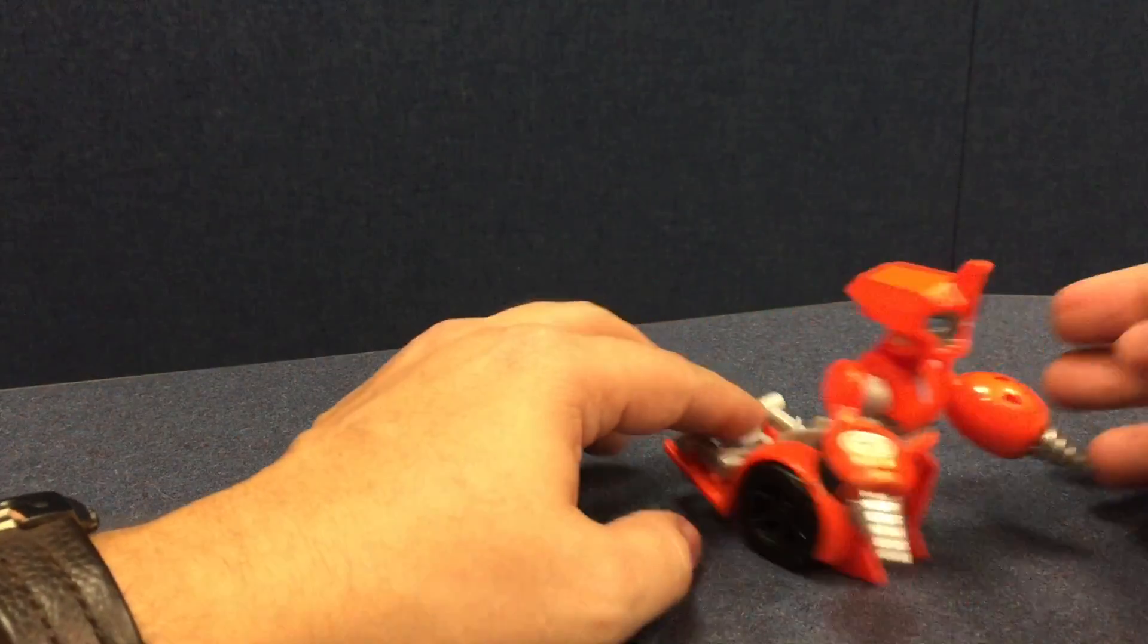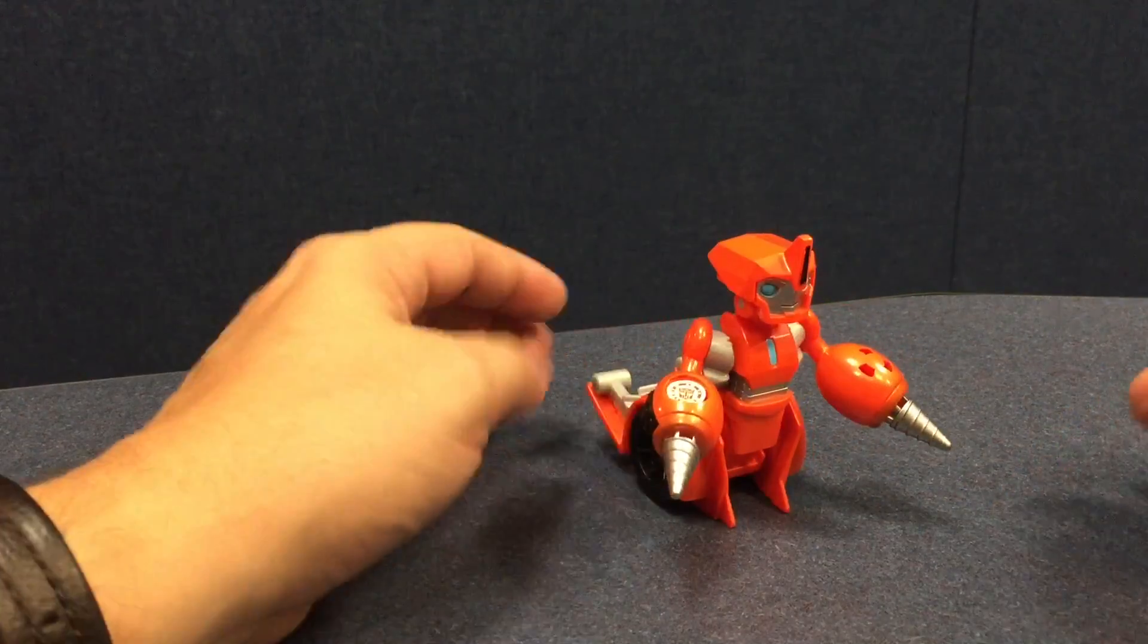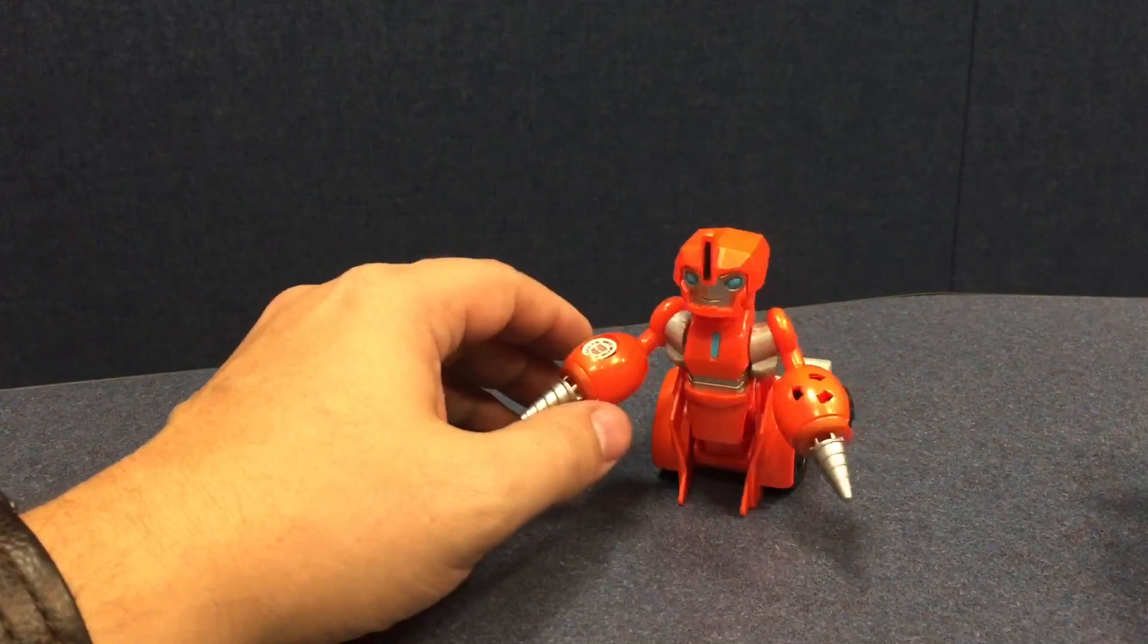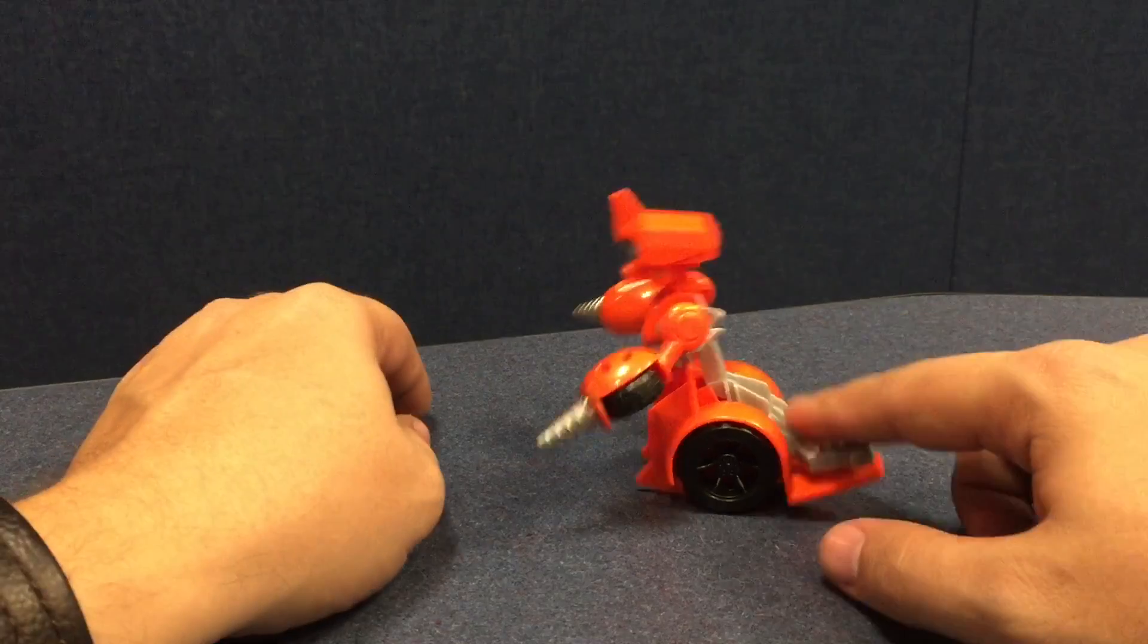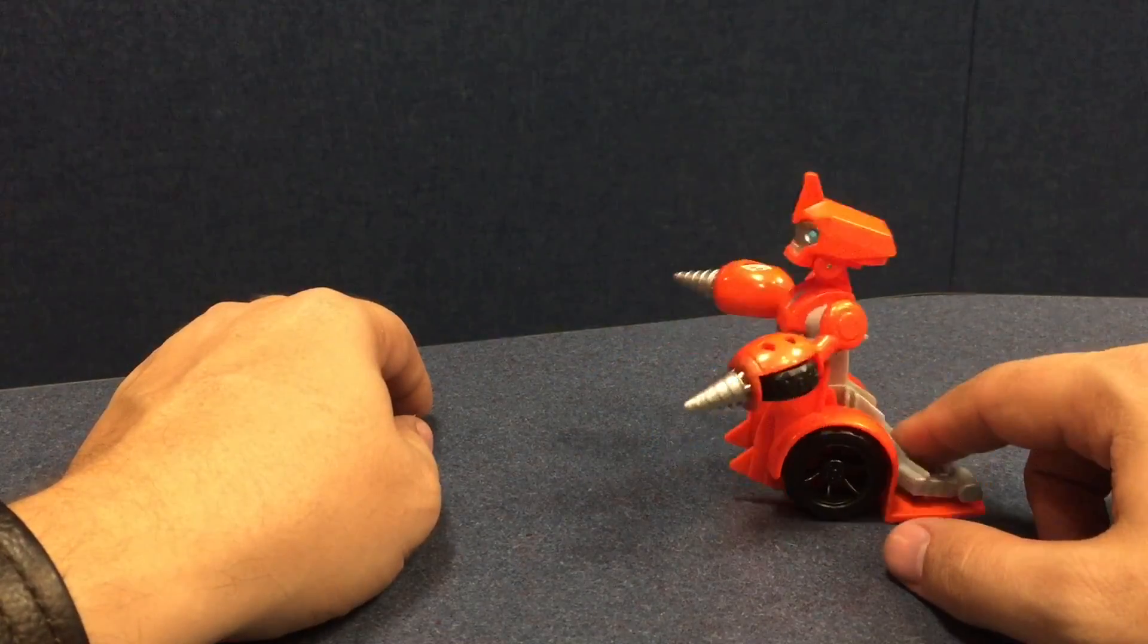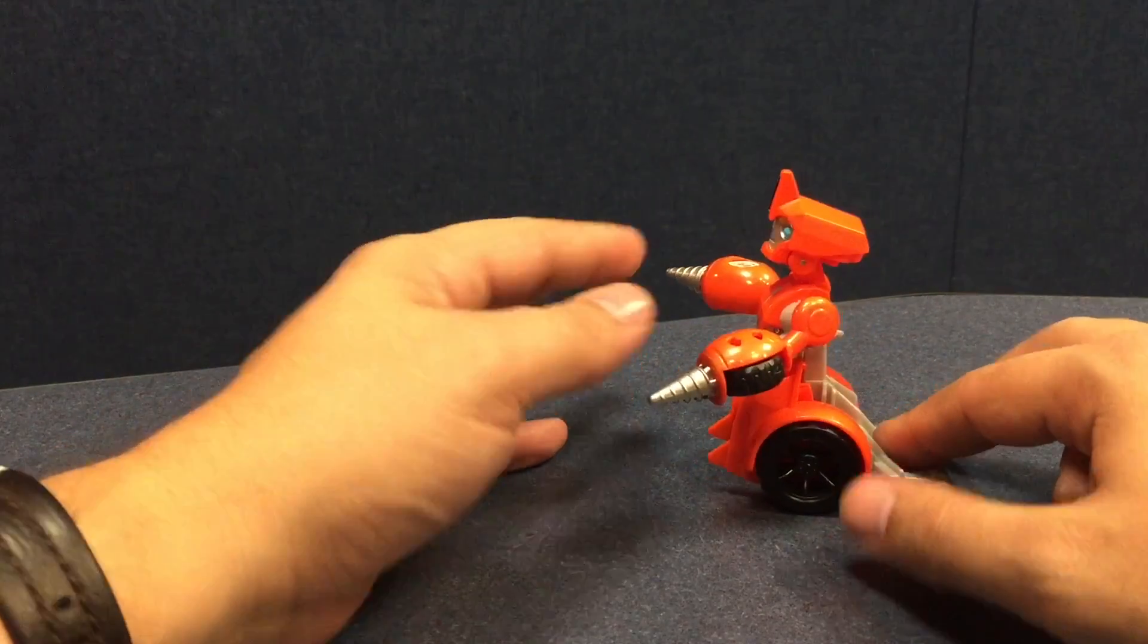He can roll around on his wheels. He has some little feet up here to steady him when he's not rolling around. I wish I'd just have him lean forward a little bit. He's a little bit too front-heavy to sit back like this.